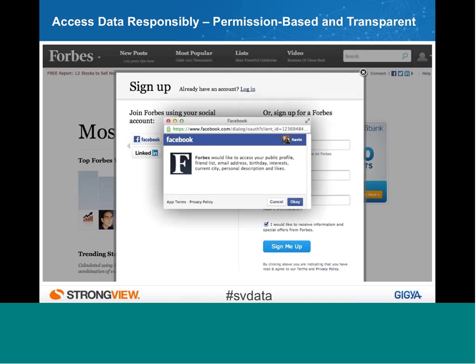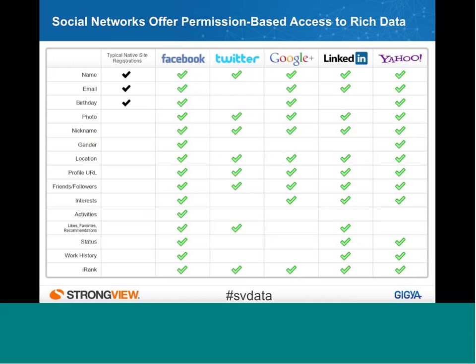In the authorization flow, users click Facebook and go through the permission process. It's important that the user is providing permission-based access to the brand — in this case, Forbes — to access certain pieces of data. Forbes can choose which pieces of data to request permission for, and best practice is to only ask for data you're really going to leverage. With one click, that data is given to the brand. The data set is extremely rich, though it differs by social provider. One thing to note: data comes in different formats and field names from provider to provider, so you need to work with a vendor that can standardize this data across different providers.